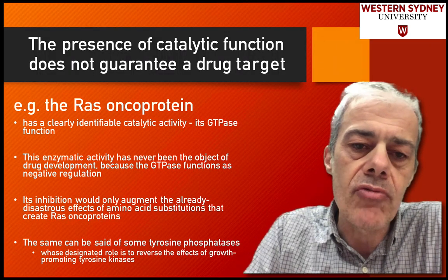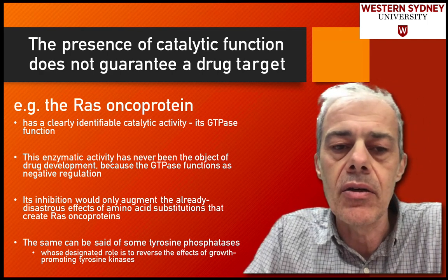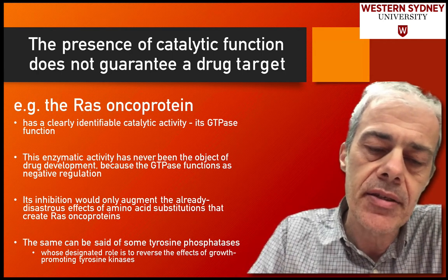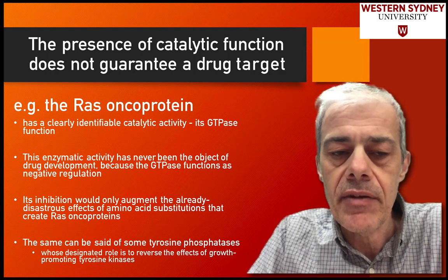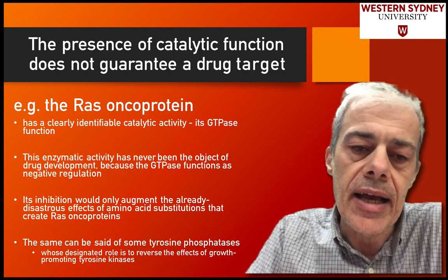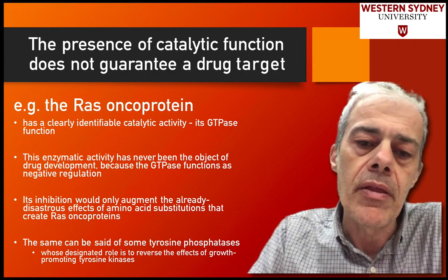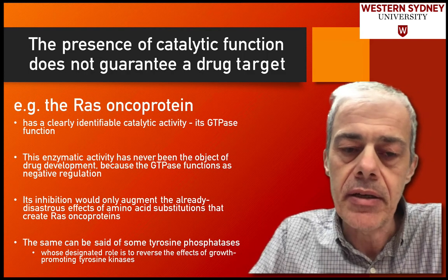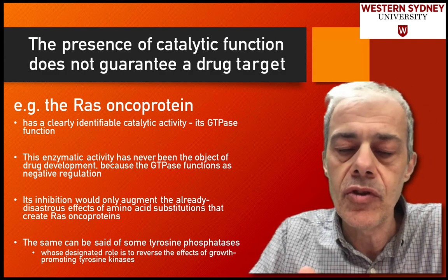Now let's think about another protein. The RAS oncoprotein is involved in many cancers — there's a high chance of a mutation causing hyperactivation of RAS. You might think that if we knock out the catalytic activity of RAS we can reduce its hyperactivation, but it doesn't work for RAS. RAS has an effector loop which is exposed and binds another protein to activate it. This loop changes structure depending on whether GTP or GDP is bound.